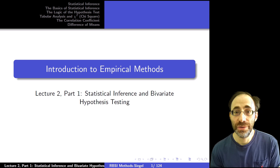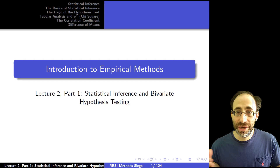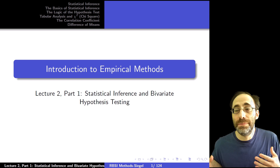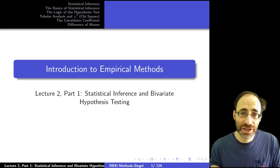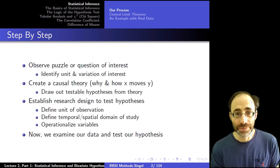Hi and welcome to lecture two. This is module two, part one, which is going to cover statistical inference and bivariate hypothesis testing. In the first lecture we discussed broad topics about how we go about the scientific process, how we develop theories, how we measure our variables, how we design our research. For the remainder of the course we're going to go into more in-depth nuts and bolts about how we go about testing our hypotheses.